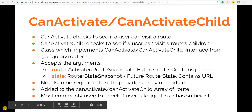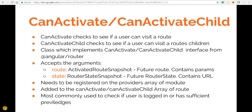Hello guys and welcome back. In this section we'll talk about the canActivate and the canActivateChild guards. canActivate checks to see if the user can visit a route, and canActivateChild checks if the user can visit the children of a particular route.